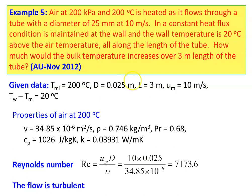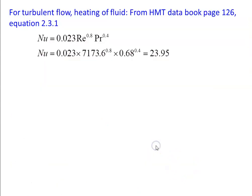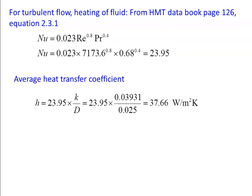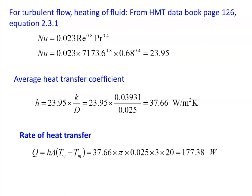For turbulent flow (HMT data book, page 126, equation 2.3.1): Nu = 0.023 × RE⁰·⁸ × Pr⁰·⁴ = 0.023 × 7173.6⁰·⁸ × 0.68⁰·⁴ = 23.95. Heat transfer coefficient H = 23.95 × 0.03931 / 0.025 = 37.66 W/m²·K. Rate of heat transfer Q = H·A·(Tw − Tm) = 37.66 × π × 0.025 × 3 × 20 = 177.38 W.